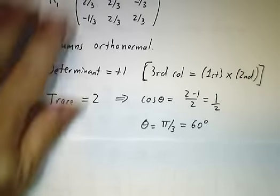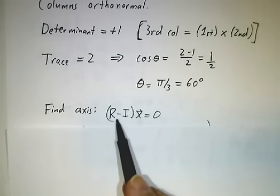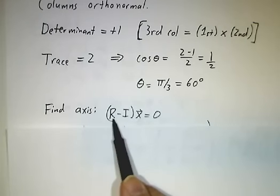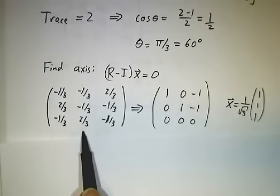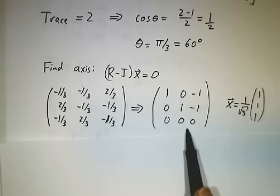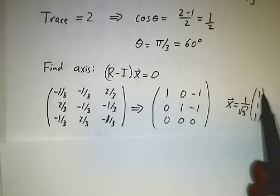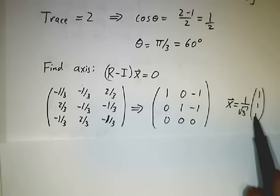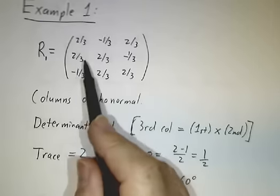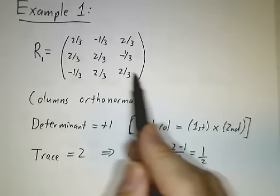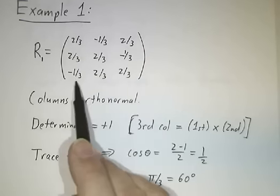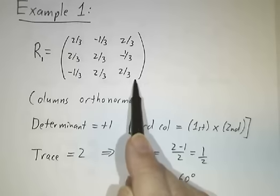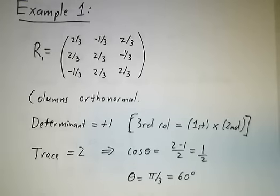How do we find the axis? We find the eigenvector with eigenvalue 1 by row reducing (R − I). Row reducing gives the eigenvector (1, 1, 1), or normalized: (1, 1, 1)/√3. You can verify this directly: the sum of entries in each row of R equals 1, so R times (1, 1, 1) equals (1, 1, 1). This confirms that (1, 1, 1) is an eigenvector with eigenvalue 1.